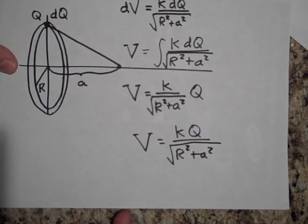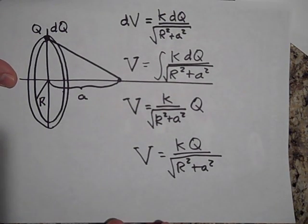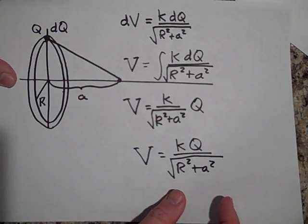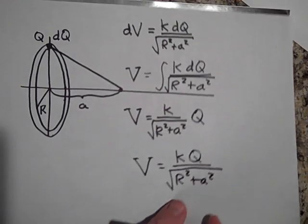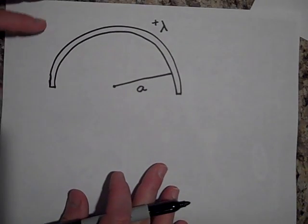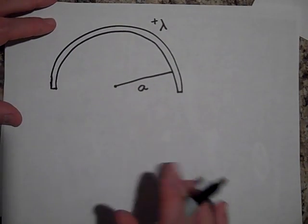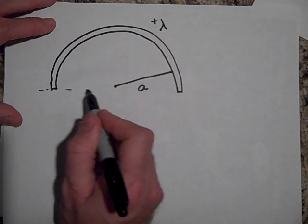So that's so nice. It's much nicer than having to do the electric field one. Let's try that again. It was so fun. Okay, so this is going to be a charge. This is a semi-circle.